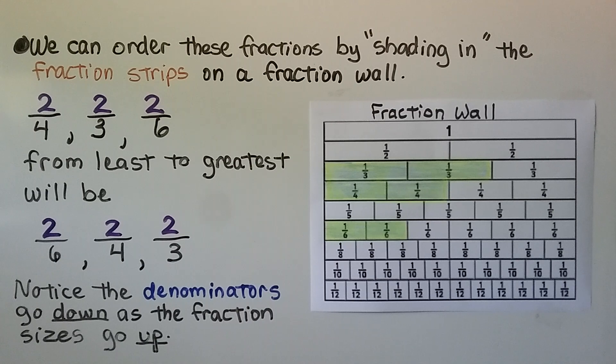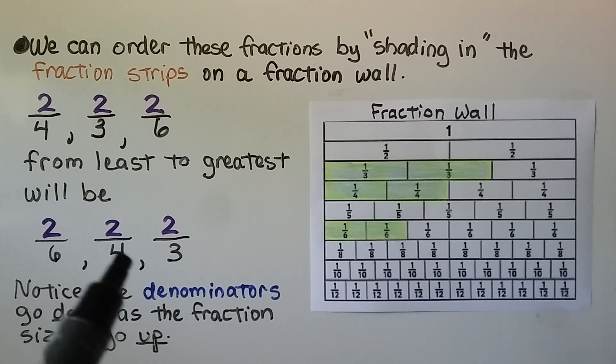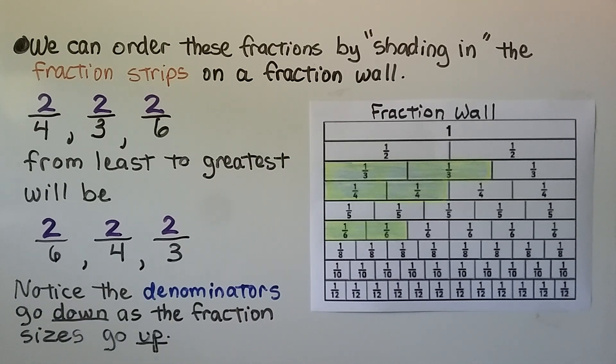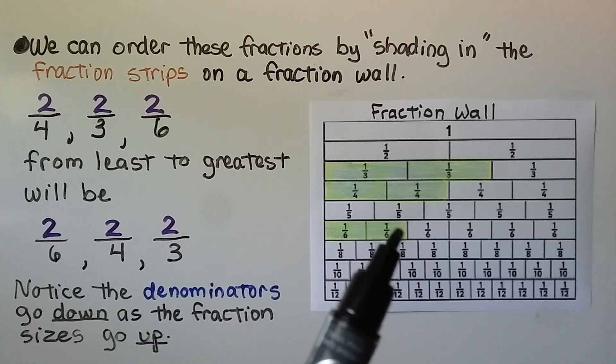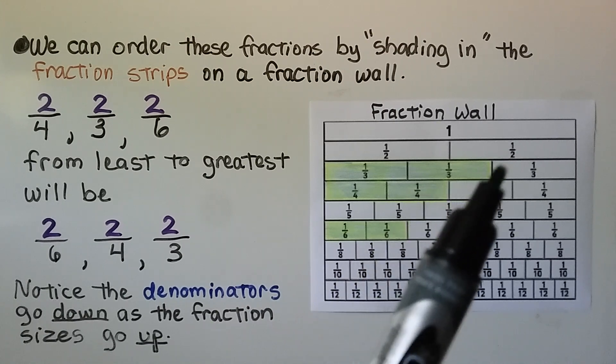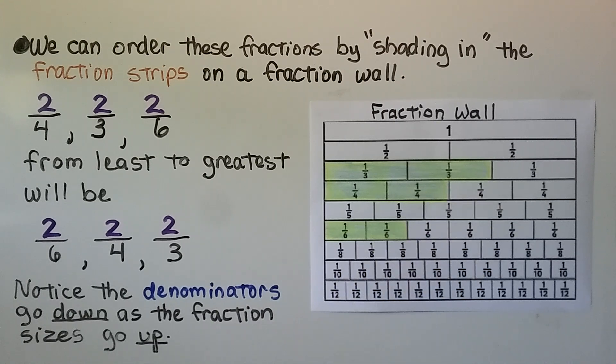Notice the denominators go down — six, four, three — as the fraction sizes go up. See that? The denominators decreased while the fractions got larger.